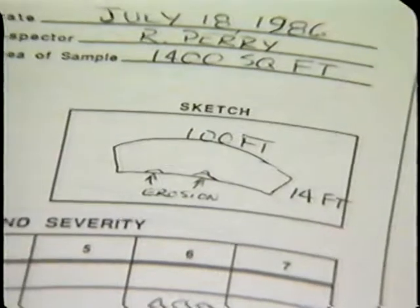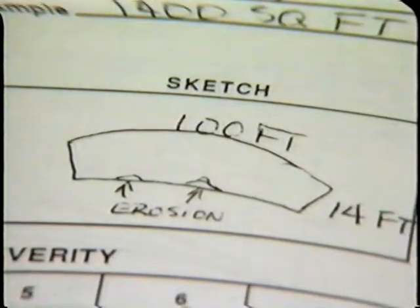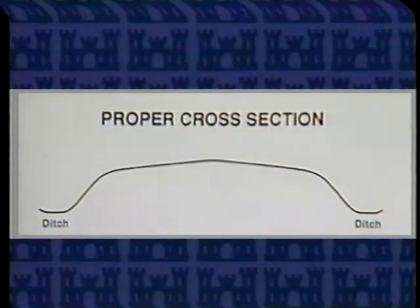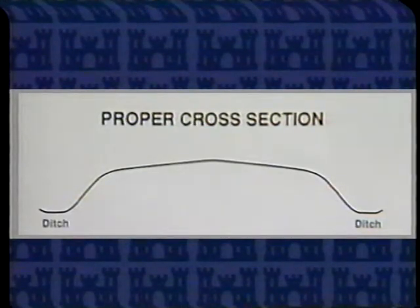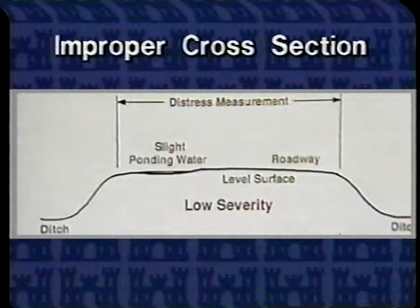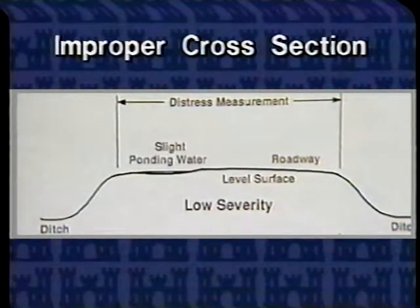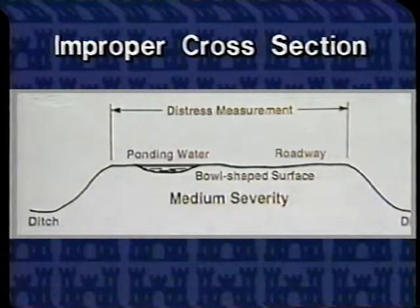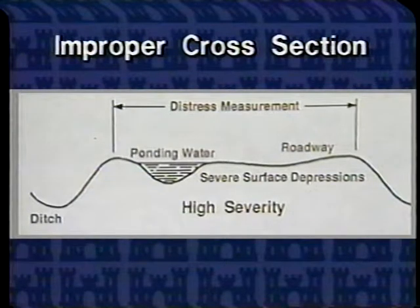First let's look at improper cross-section. A proper cross-section has sufficient crown or bank on curves to carry water to the ditches. Even a slight ponding of water indicates improper cross-section. When the road surface is level and there's evidence of a small amount of standing water, this is called low severity. When there's a slight bowl shape or evidence of a moderate amount of standing water, we call it medium severity. Evidence of a lot of standing water or the presence of severe depressions puts it into the high severity classification.